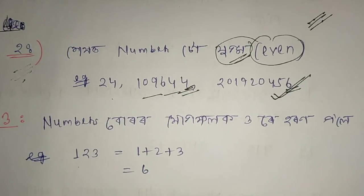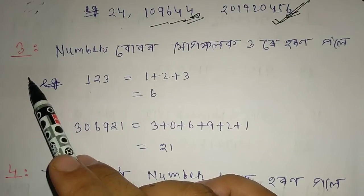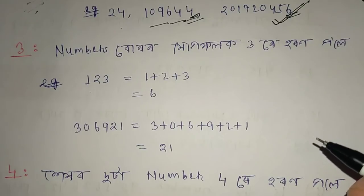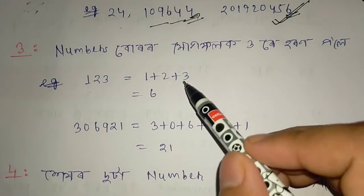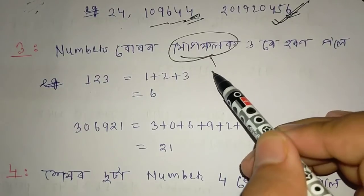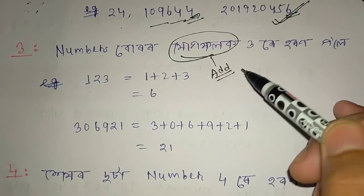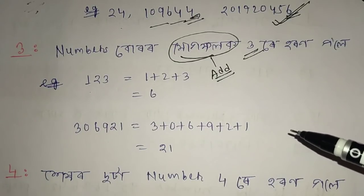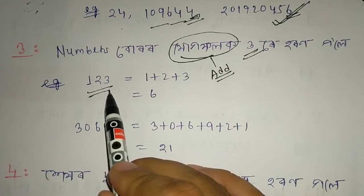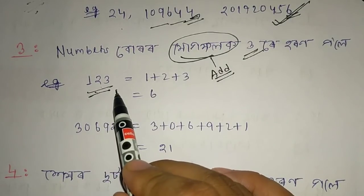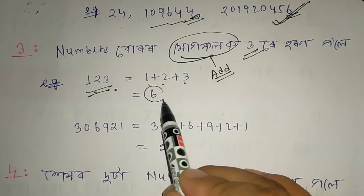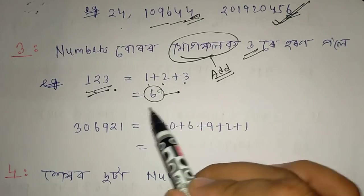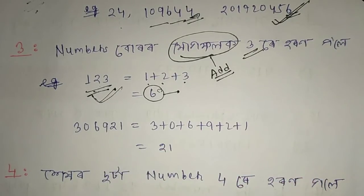Next, the number will divide. If there is a number, we will add the digits. The number will add, and then divide. For example, I will add 1 plus 2 plus 3, which equals 6. I will divide by 3, so 6 divided by 3 is 2. So 123 is divisible by 3. Clear?